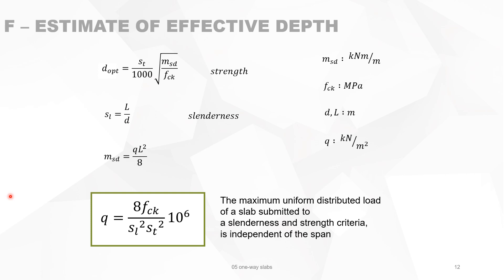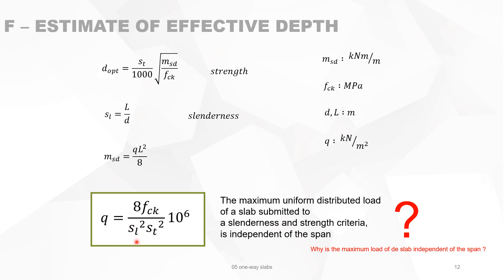So without knowing the span, you can already determine the maximum load for a certain slab. You do not even have the slab thickness in it, because the span and depth are included in the slenderness term SL, while the strength term ST accounts for the material. It is a very useful formula to estimate the maximum uniform distributed load on a slab.